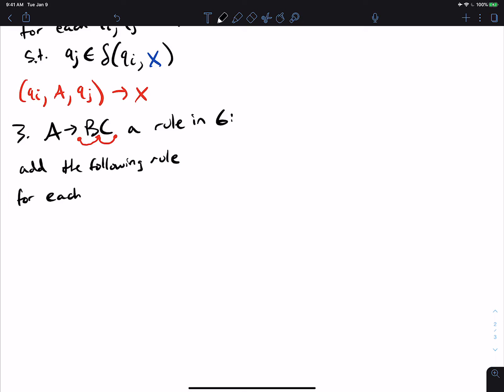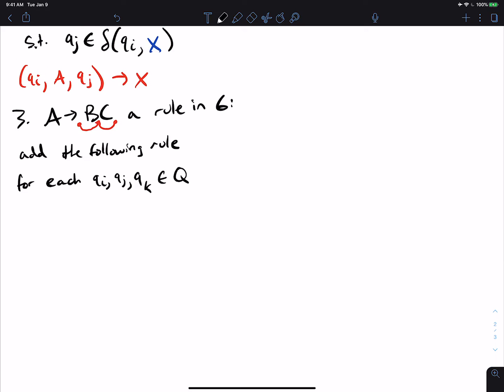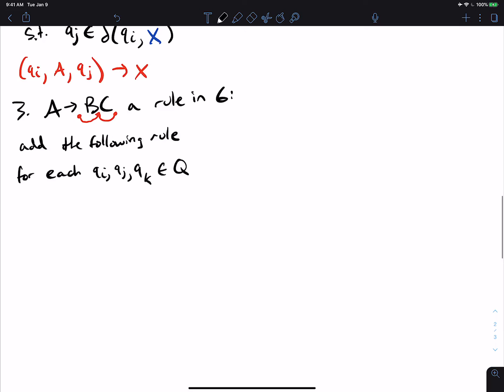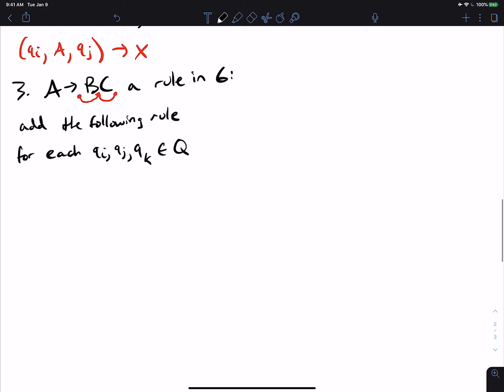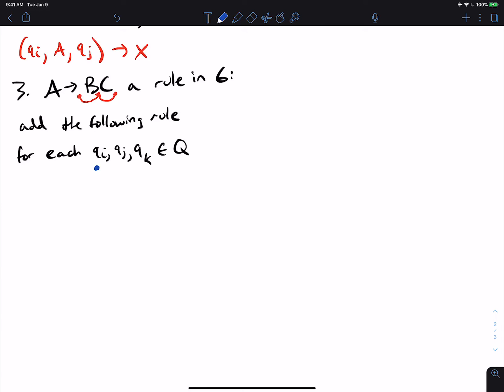So what we're going to do is add the following rule. For each, now we need three states, not two states, and they can all be the same, could all be different. But so for each triplet of states in the NFA, and they may or may not be adjacent to each other because we may need to generate a whole gigantic string from each of the two variables B and C. We don't know necessarily, but as long as I can get from QI to QJ and from QJ to QK, then we are fine.